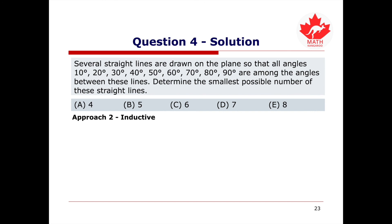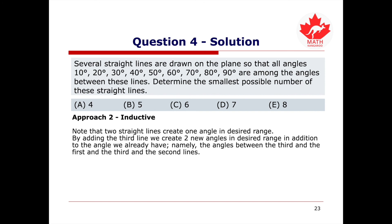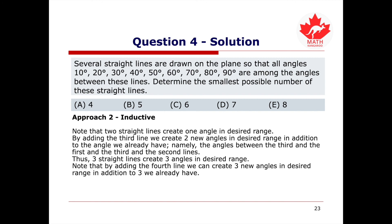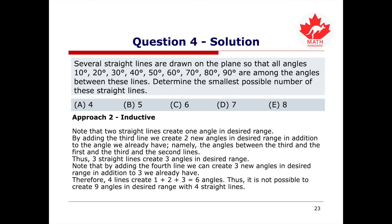Approach 2 thinks inductively. Two straight lines create one angle in the range. Adding a third line creates two new angles, giving three total. Adding a fourth line creates three more new angles, for a total of one plus two plus three, or six angles. Thus it is not possible to create nine angles in the range with four straight lines.